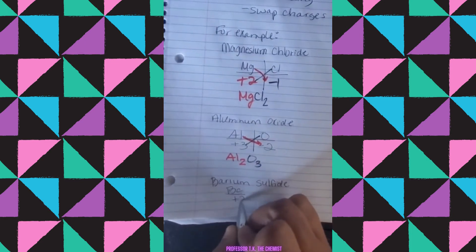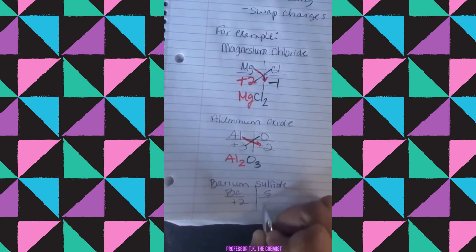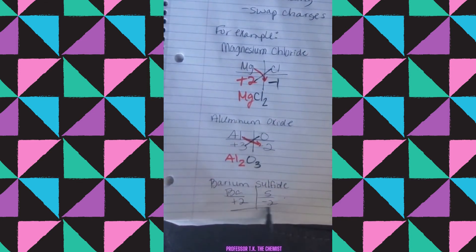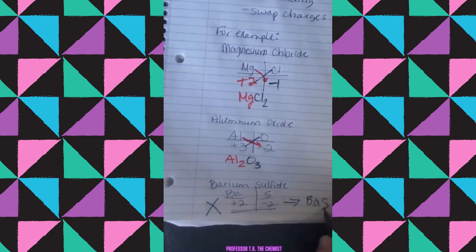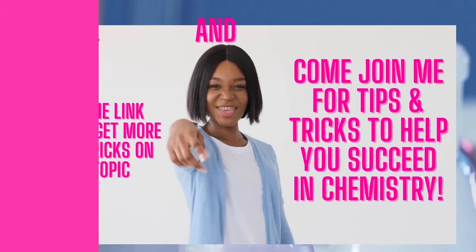And let's do the last one where you have barium and sulfur. It's called barium sulfide. Well, they both have the same number in common. They cancel each other out and the subscripts don't need to be written.